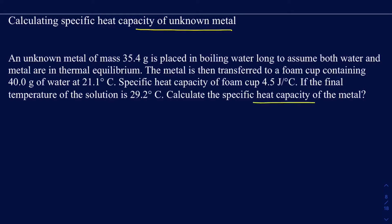A typical procedure for finding specific heat capacity involves throwing a metal into boiling water. When you throw the metal in the boiling water, you assume both the water and metal will reach thermal equilibrium — meaning the temperature of the boiling water and the temperature of the metal will be the same. The metal is then transferred to a foam cup containing some water, and based on the temperature change of that cooler water, you can calculate the specific heat capacity of the metal.